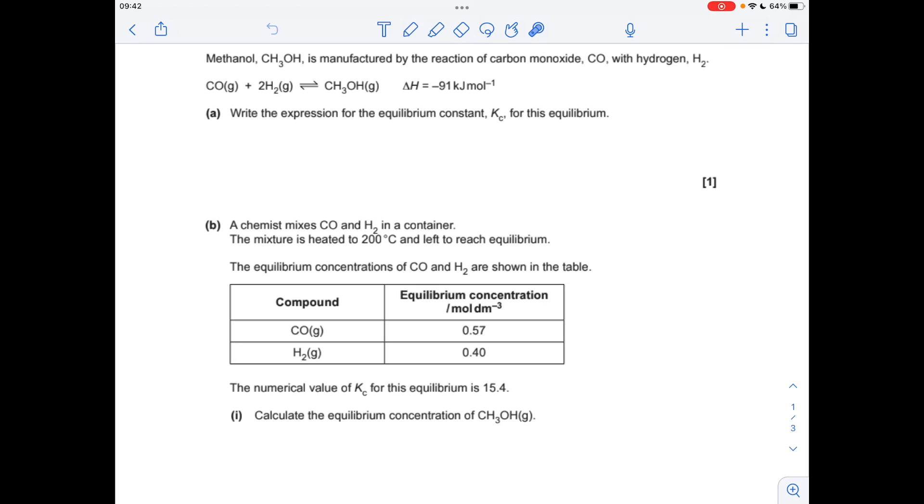So remember, KC is the equilibrium concentration of the products over the reactants, but remember, if there's a number balancing a substance, it needs to become a power. So there it is there, just remember the terms multiply each other, so we don't want to see any plus signs between these concentration brackets, and remember it's square brackets for concentration.